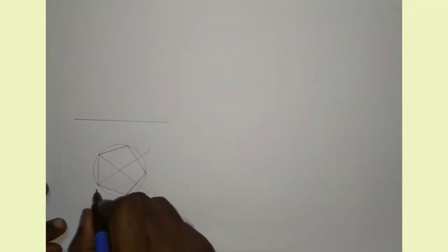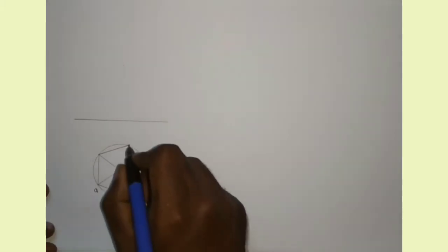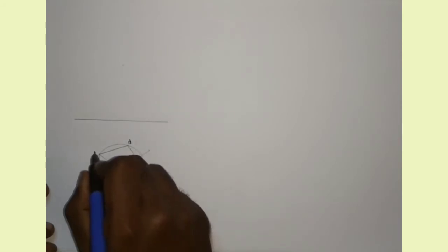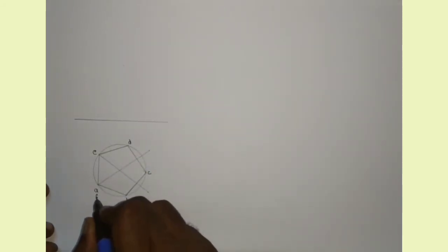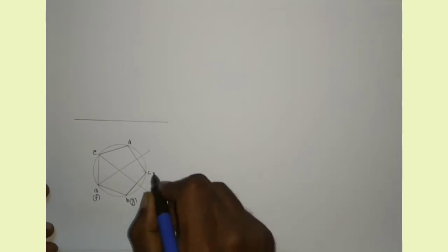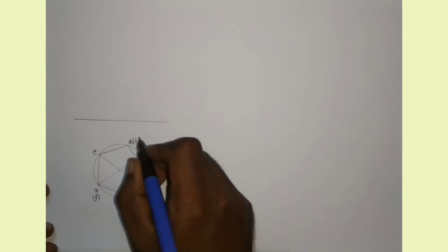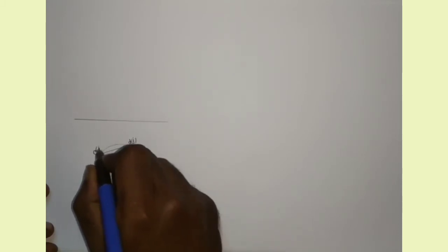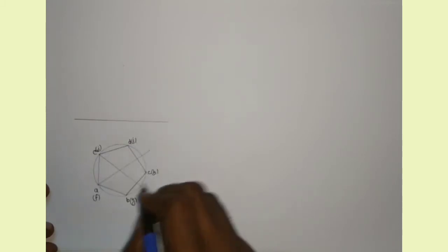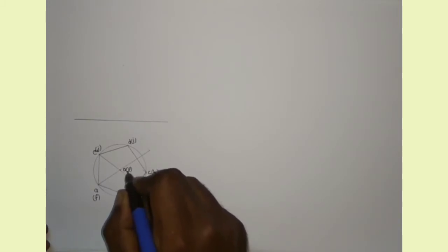Now I am marking points as A, B, C, D, E, F, G, H, I, J. I am marking the center point as O. On the other side of the axis we can see P.